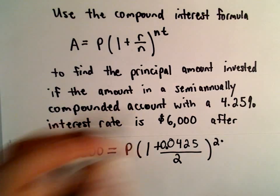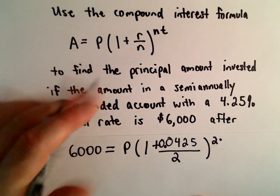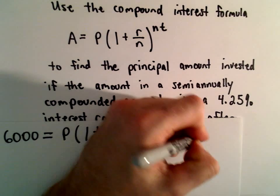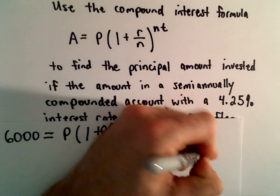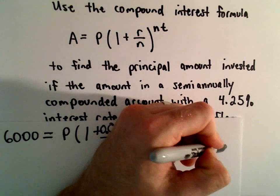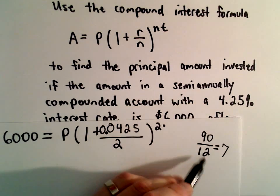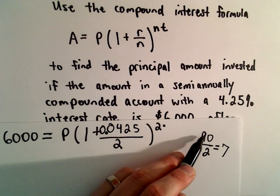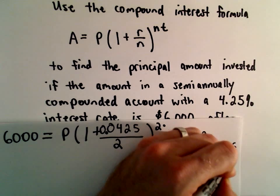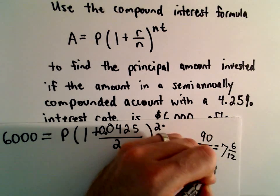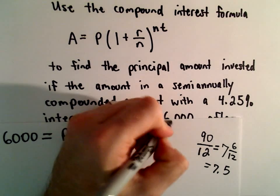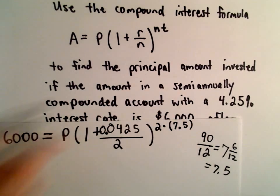And then we'll do 2 multiplied by the number of years. Well, 90 months — if we take 90 and divide that by 12, 12 will go into 90 seven times, leaving us with 6 months out of 12 left over, or 7.5. That'll be the number of years.